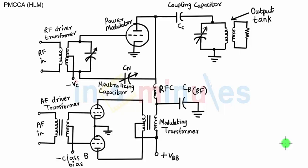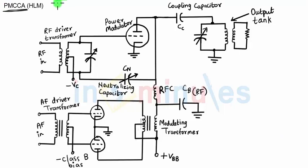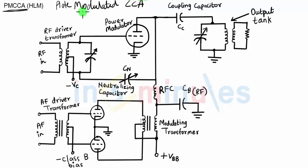Let us study the circuit diagram of PMCCA, which stands for Plate Modulated Class C Amplifier. The previous circuit diagram that we had studied was called Grid Modulated Class C Amplifier. This one is called Plate Modulated Class C Amplifier.